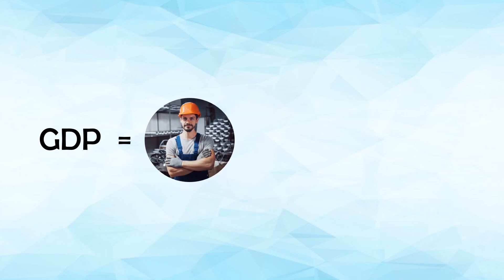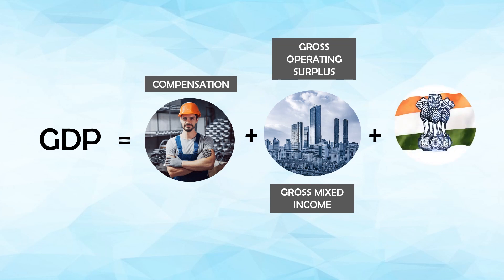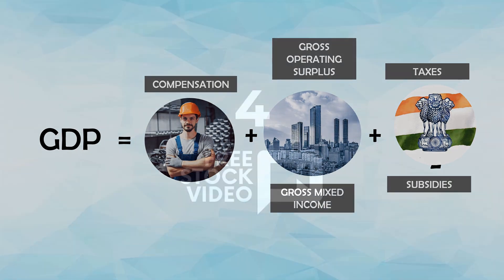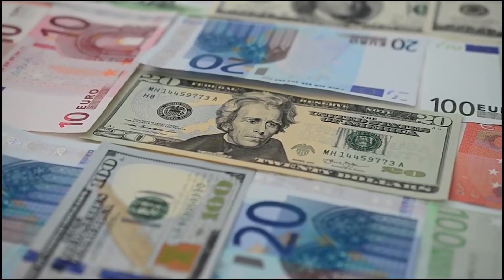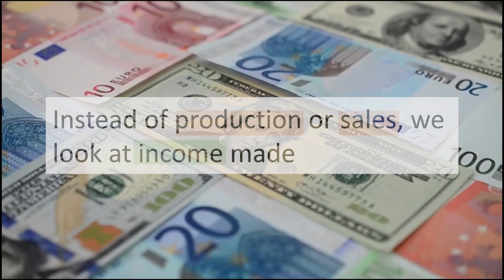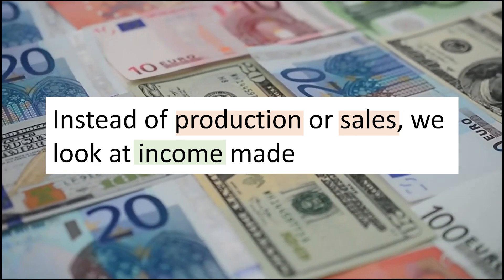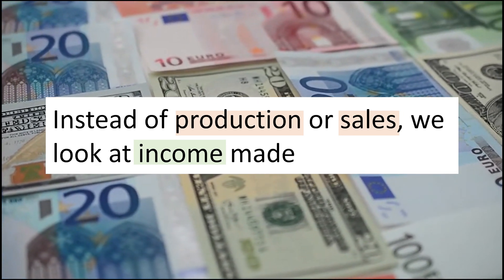The formula for this method is: GDP = Compensation of Employees, plus Gross Operating Surplus, which represents the profits earned by businesses, plus Gross Mixed Income, which is the income of unincorporated businesses and self-employed individuals, plus Taxes on Production and Imports minus Subsidies. Summing all these components provides GDP using the income approach. So instead of focusing on what's made or sold, it looks at how much money people and businesses are making from those things.